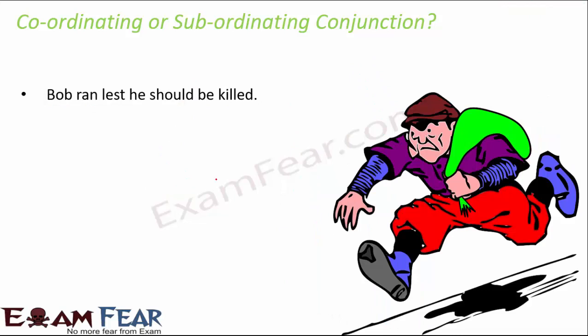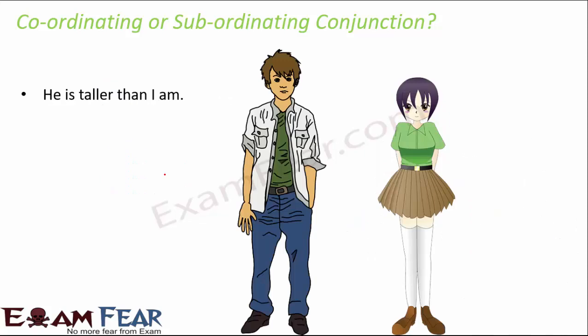The next example: 'Bob ran lest he should be killed.' The word 'lest' is used to indicate something like 'otherwise.' So 'Bob ran lest he should be killed' shows the purpose — why Bob ran. Therefore, 'lest' is the conjunction in this case, and it is again a subordinating conjunction because it indicates a purpose.